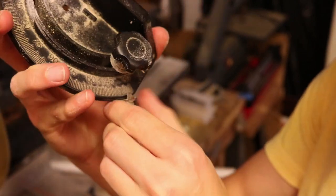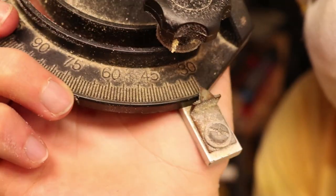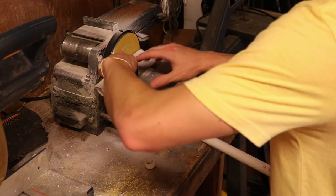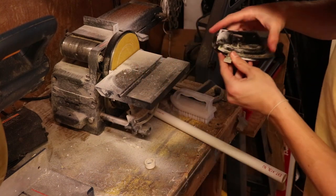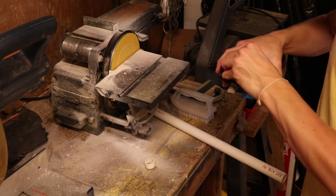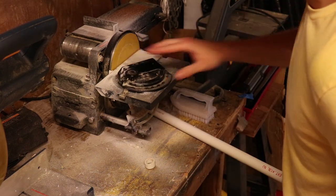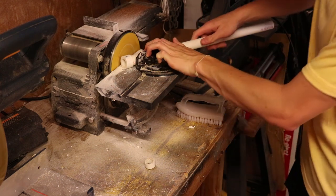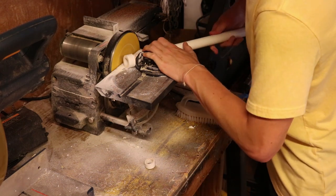And now we need to set our angle to 30 degrees. And now we need to sand at that 30 degree angle until we see a notch starting to form at the top of the mouthpiece.